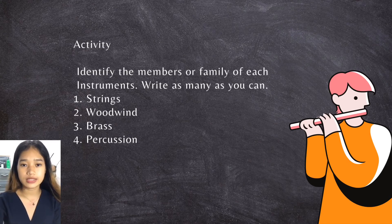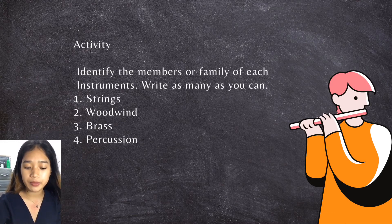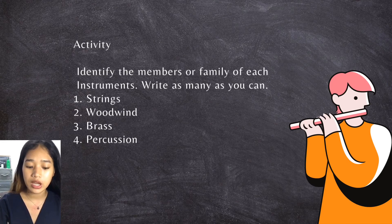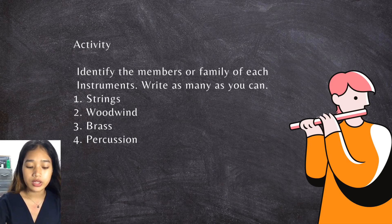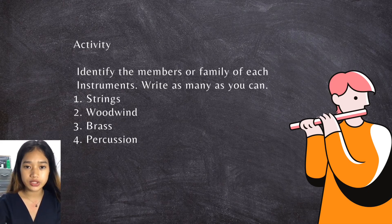Okay class, let's proceed to the activity. Identify the members or family of each instrument — write as many as you can. The following items are: strings, woodwind, brass, and percussion. Please answer this activity.